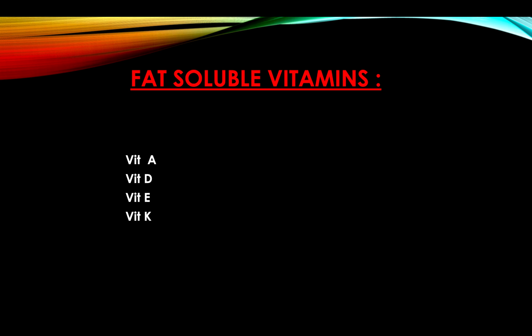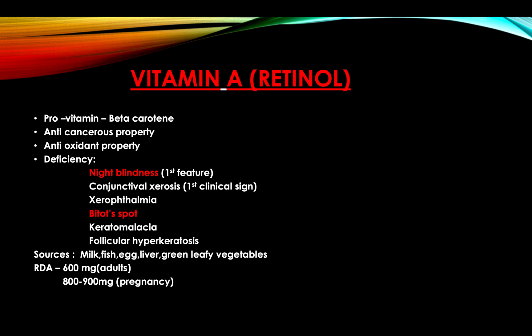Fat-soluble vitamins are Vitamin A, D, E, and K. Vitamin A, or retinol — its provitamin is beta-carotene. It has anti-cancerous and antioxidant properties. Deficiency produces night blindness as the first feature, followed by conjunctival xerosis, Bitot's spots, xerophthalmia, keratomalacia, and follicular hyperkeratosis. Sources include milk, fish, egg, liver, and green leafy vegetables. RDA is 1000 mcg in adults, and 800 to 900 mcg in pregnancy.